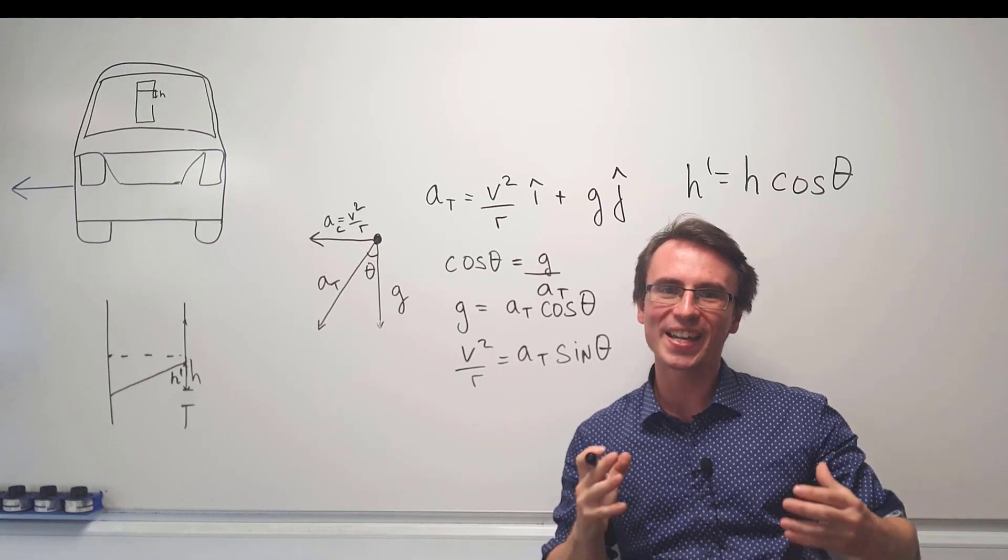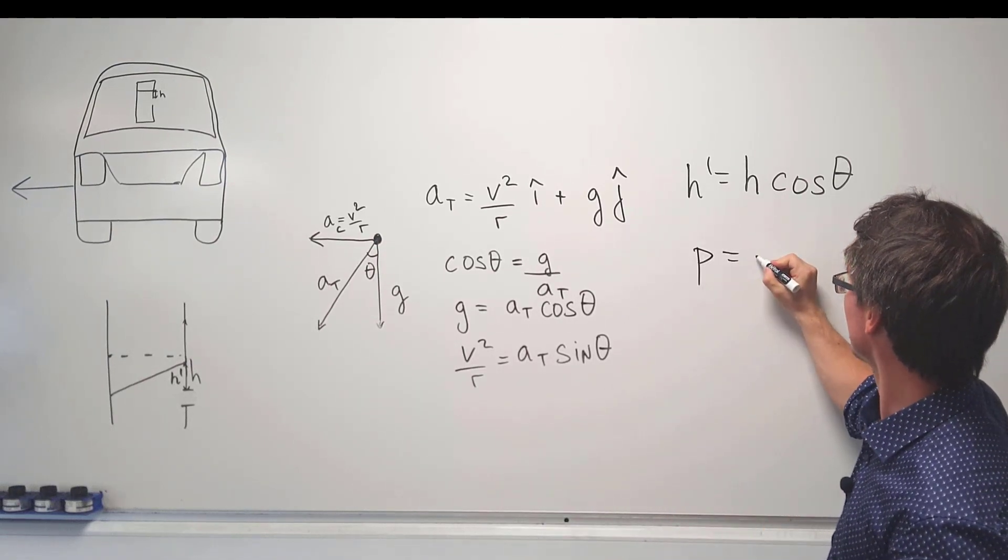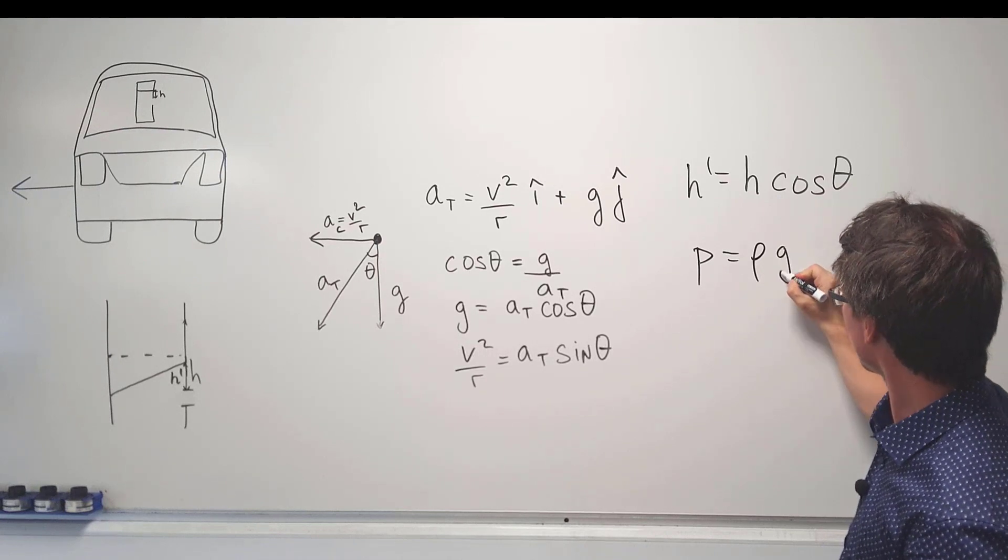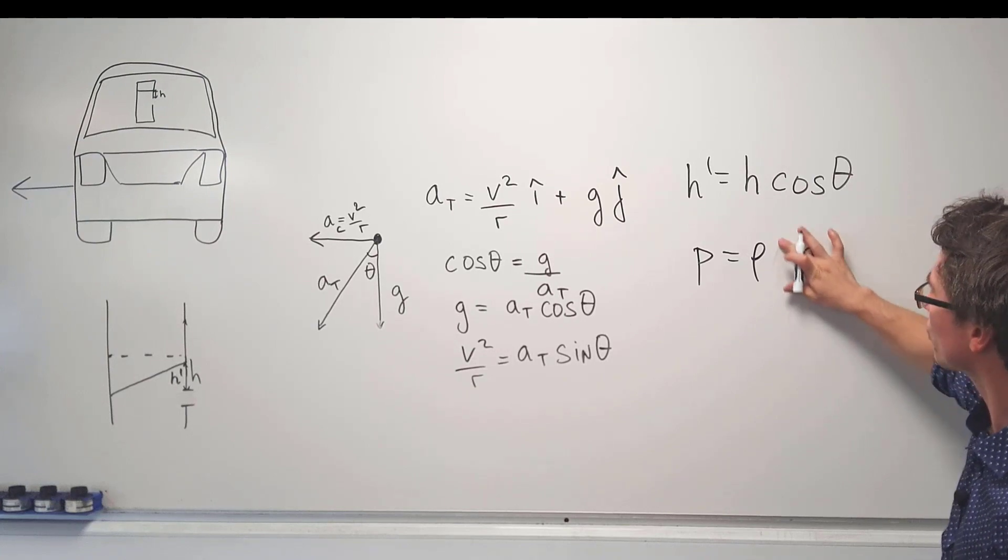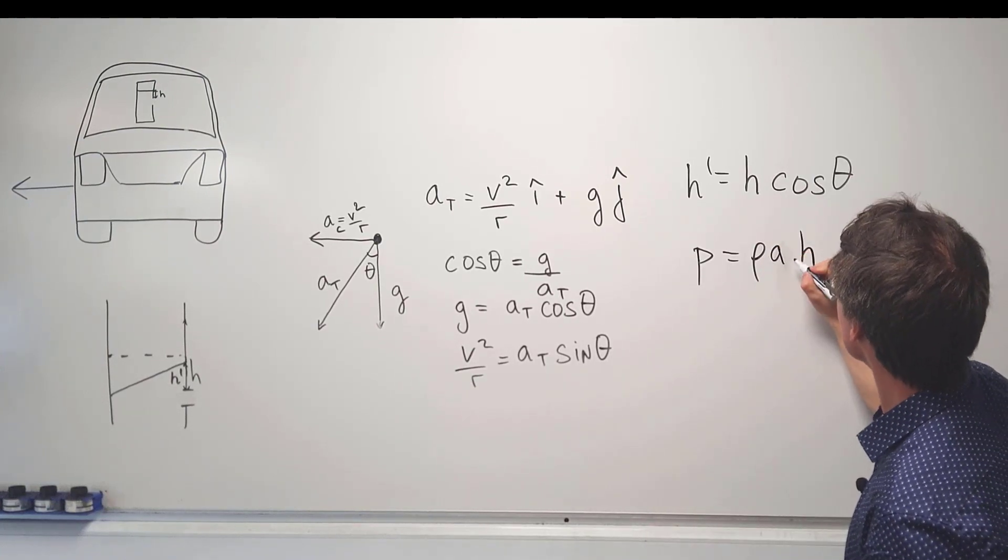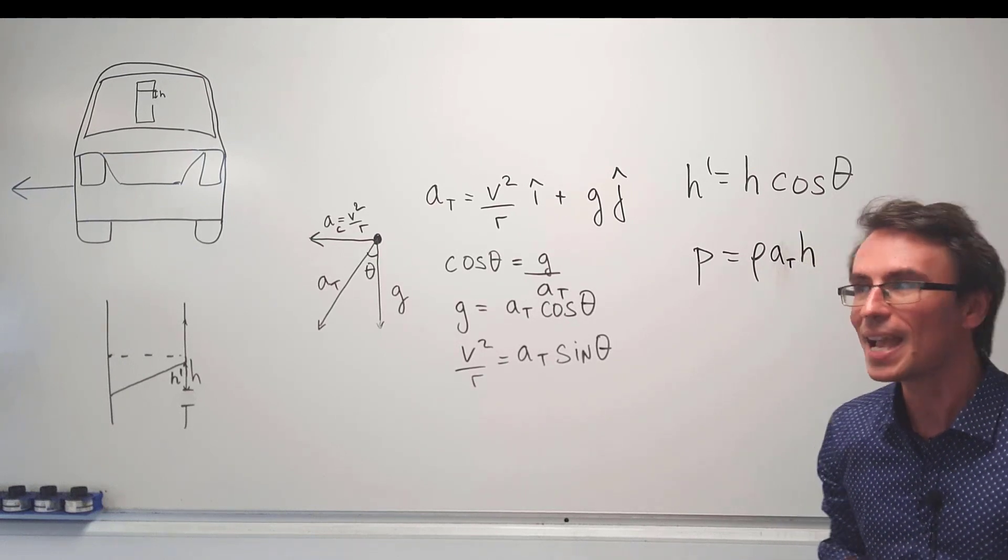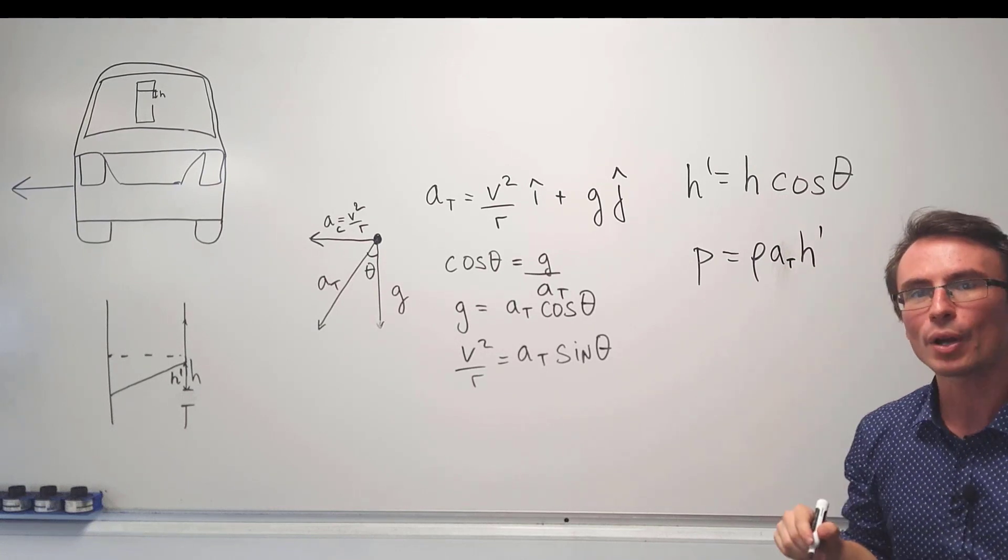Now let's think about the pressure at a height H. This is typically given by the formula that pressure is equal to the density times G times H. However in this case the resultant acceleration will not be just G pointing straight downwards but will now be the total acceleration, and the height coordinate is determined by this equation which is just H prime.